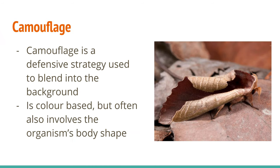Camouflage is one that we know pretty well. It involves trying to blend into the background — like this moth is pretending to be a leaf and doing a very good job of it. Camouflage is often about colors and patterns that let you blend in, but anything that breaks up an organism's shape or changes its silhouette to make it look like something else is also a really important part of camouflage. Snakes can have faces that look like leaves, and insects can be shaped like tree branches.